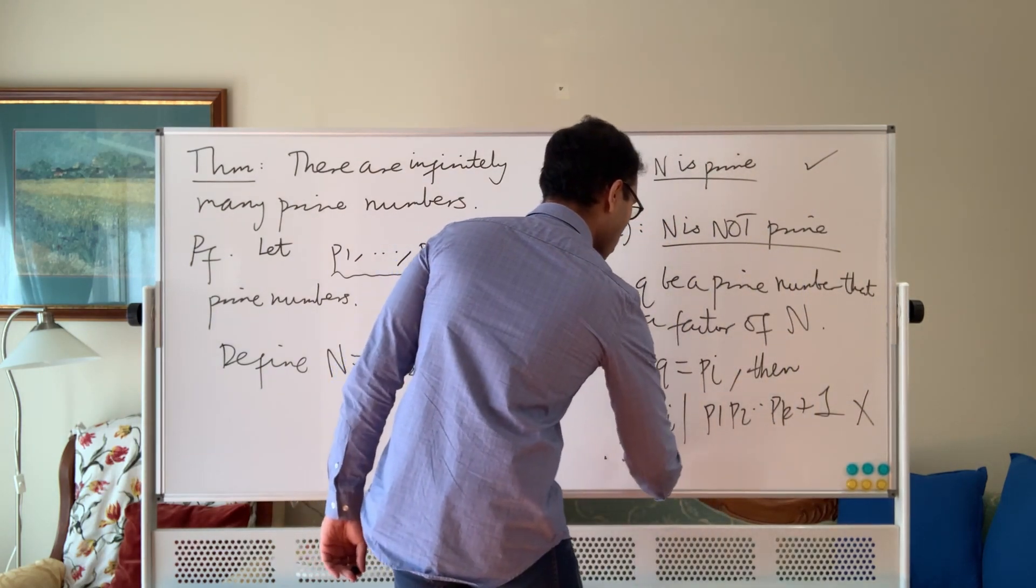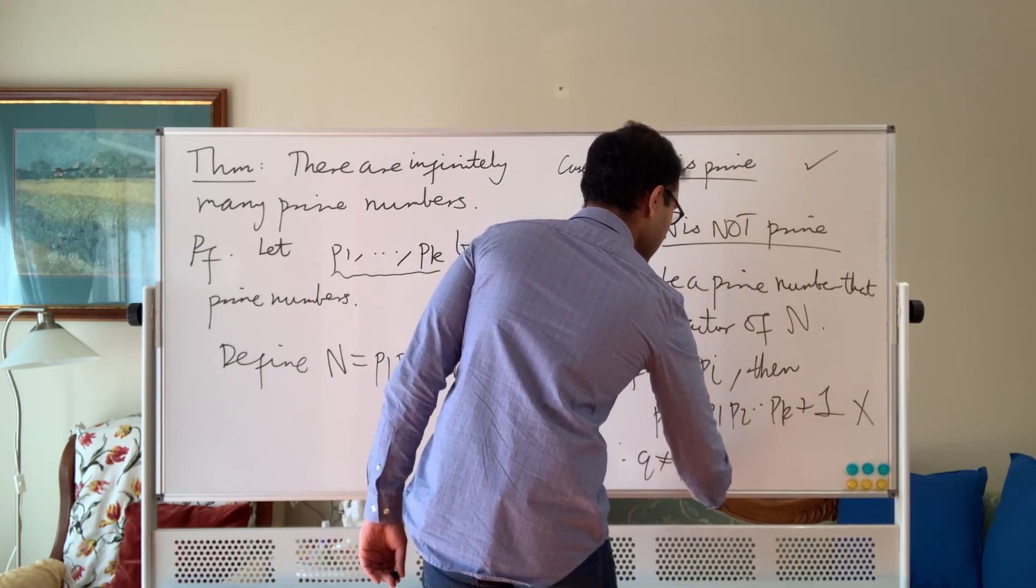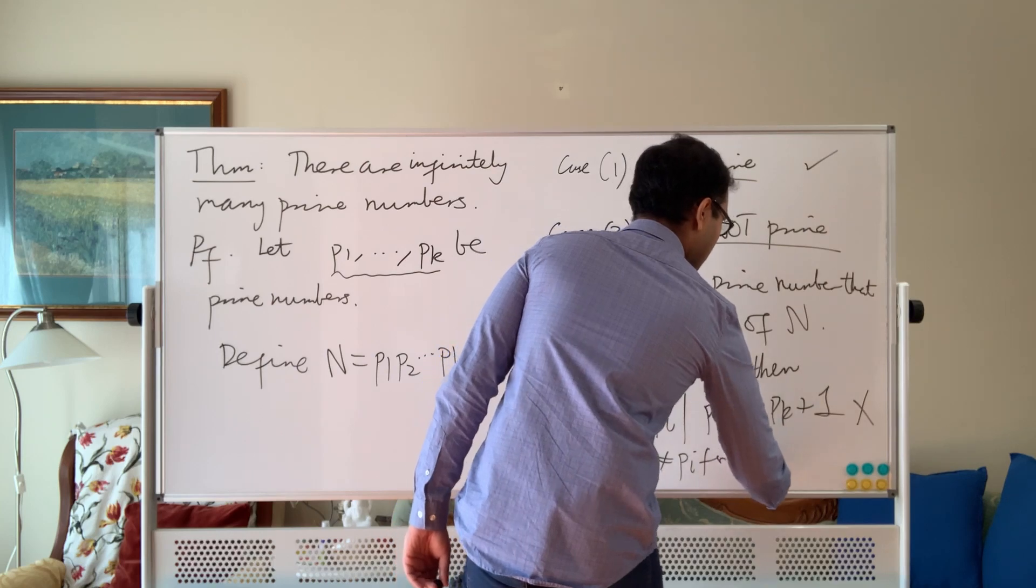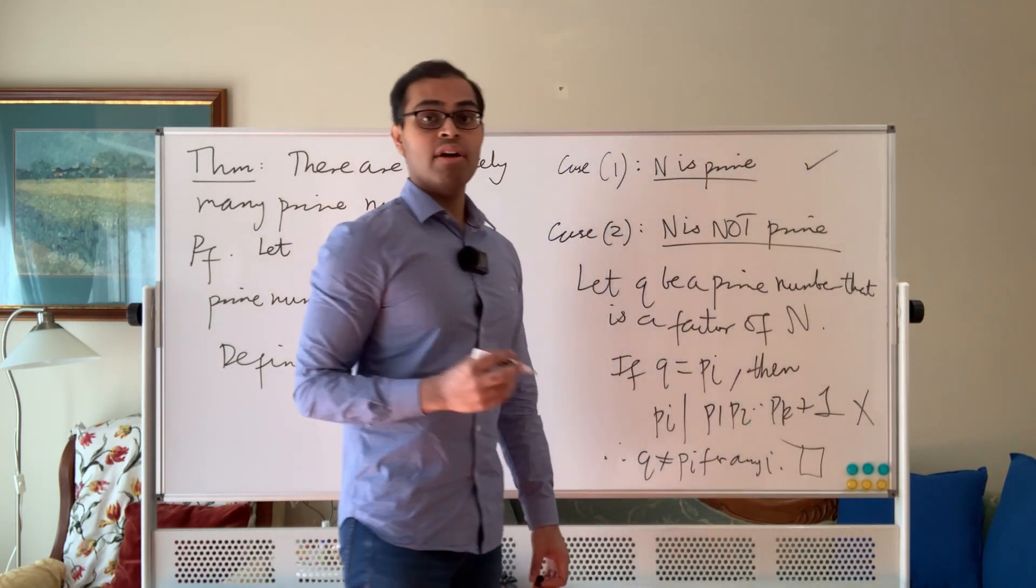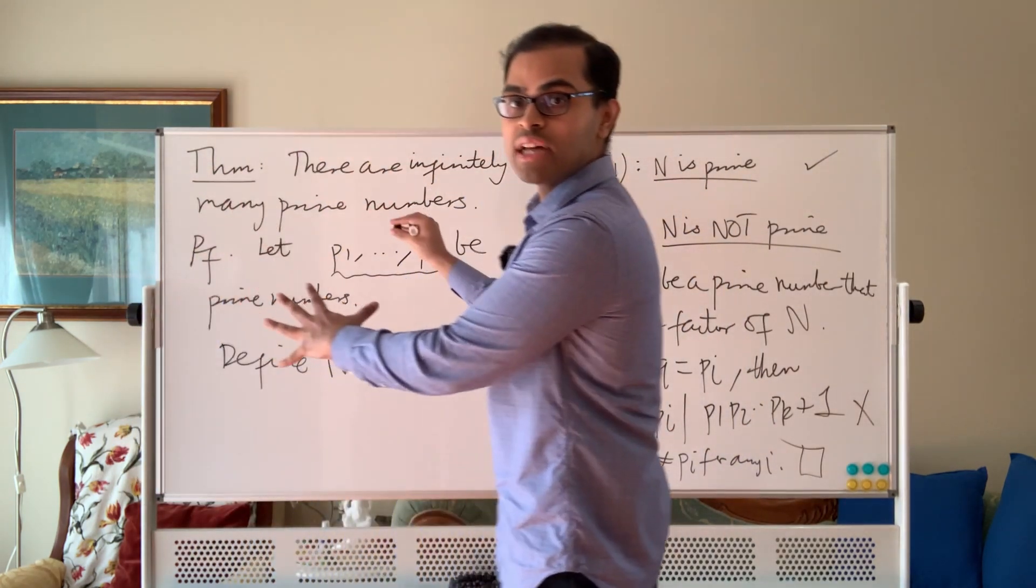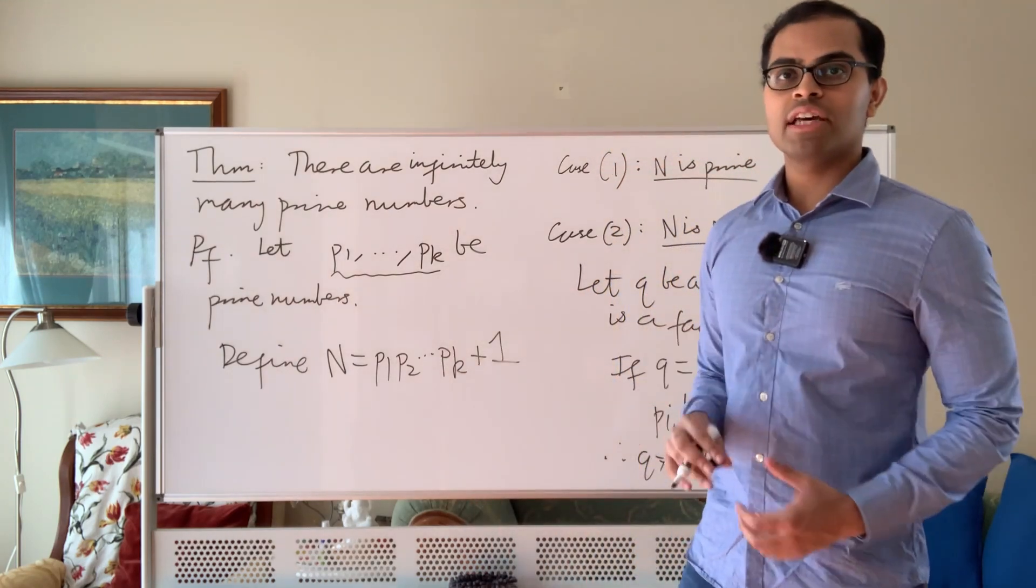So therefore, q is not equal to Pi for any i, and we have found a prime factor that is—we have found a prime number that's not in the list we started with. And so therefore there are infinitely many primes.